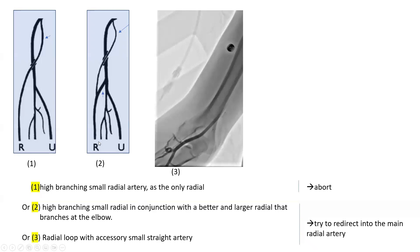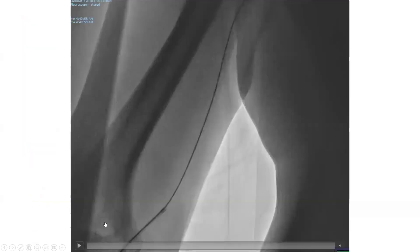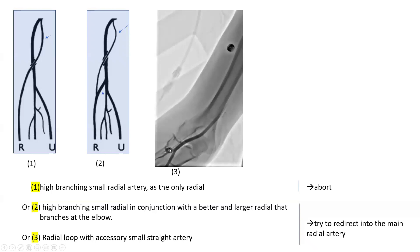The third option is that you actually have a radial loop. In my experience, this is the most common option when you encounter difficulties like this. There is a standard branching radial artery at the elbow after the loop, but there is also a small branch coming from the apex of the loop and joining high up the brachial or axillary artery. Your gear is going into that easier, straight, small radial. Those are the three options.